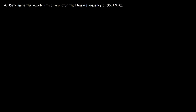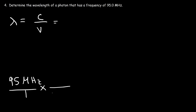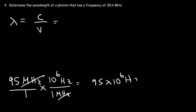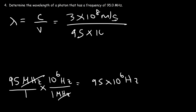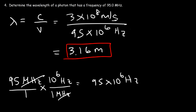Number 4: determine the wavelength of a photon that has a frequency of 95 megahertz. The wavelength is the speed of light divided by the frequency. First, let's convert megahertz to Hertz. Mega represents 10 to the 6, so 95 megahertz equals 95 times 10 to the 6 Hertz. Plugging into the equation and dividing, you should get 3.16 meters as the wavelength.